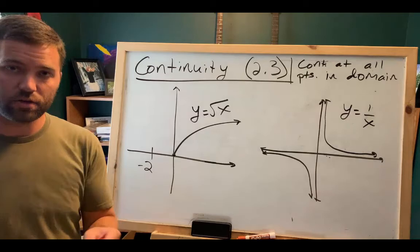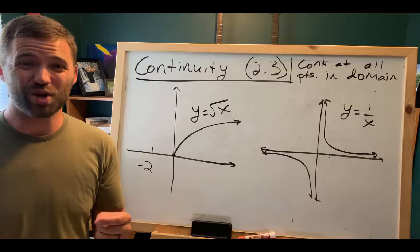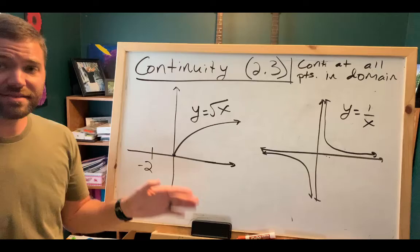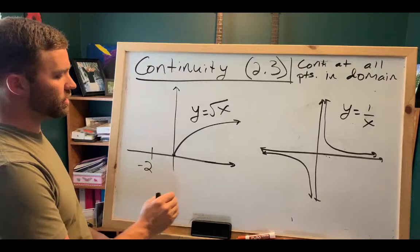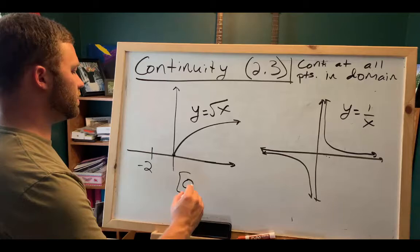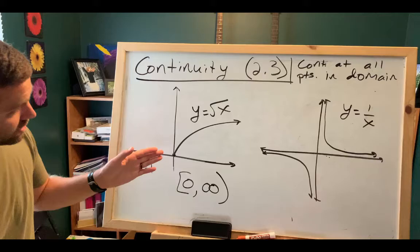A continuous function is one that is continuous at every point in the domain of the function. So y equals square root of x is a continuous function because it's continuous at all points in the domain. The domain of this function is all real numbers greater than or equal to 0 — in interval notation, 0 to infinity. There are no discontinuities in the domain.